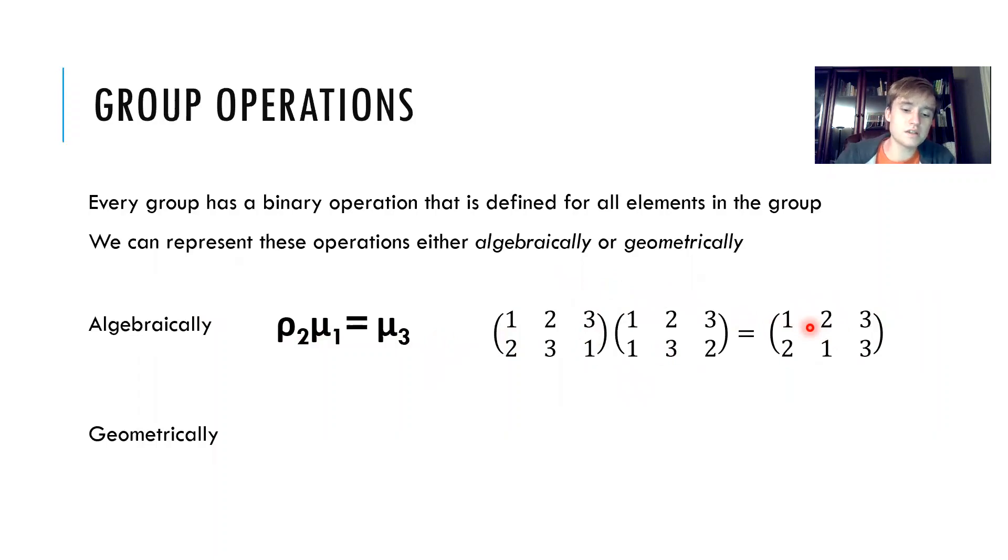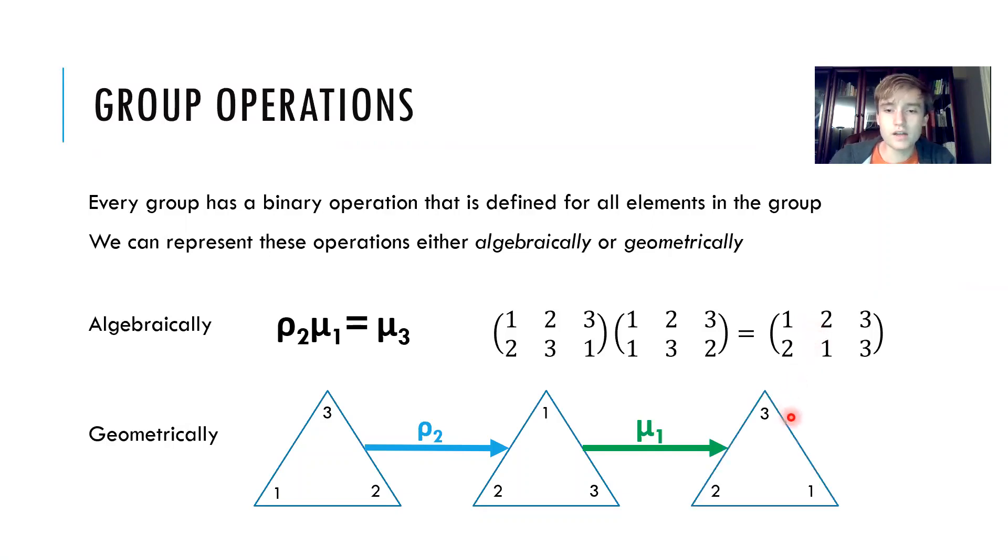Sometimes we've seen it geometrically too. If we want to show that we're operating rho two with mu one, we start with the triangle rho naught and then perform the operation with rho two to get the intermediate triangle, and then perform the operation with mu one to get the end product. Both ways result in the same answer, but one is showing it in more of an intuitive way.